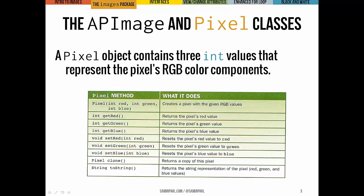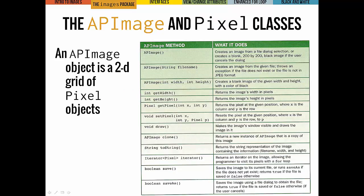The two most important classes in the Images Package are the APImage class and the Pixel class. The Pixel class defines a single pixel — it's how we represent a particular pixel. A Pixel object has three int values, each representing red, green, or blue. We have a bunch of different methods that we'll go through in detail later. The APImage class is the object we'll use to represent an entire image — it's essentially a two-dimensional grid of pixel objects.